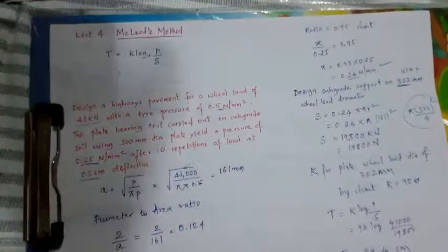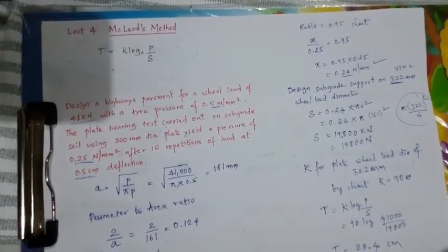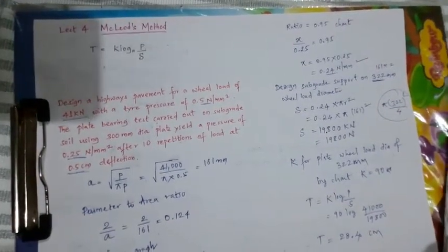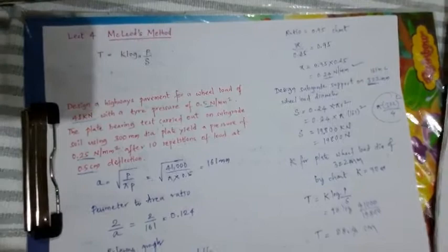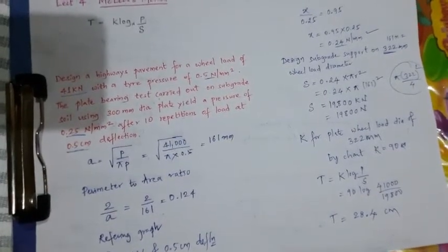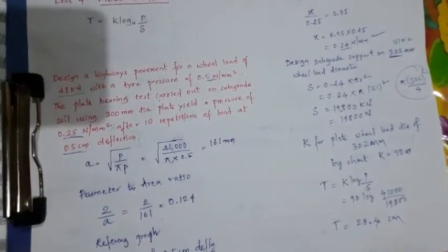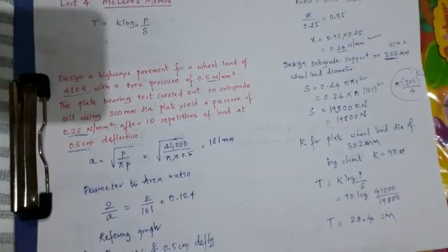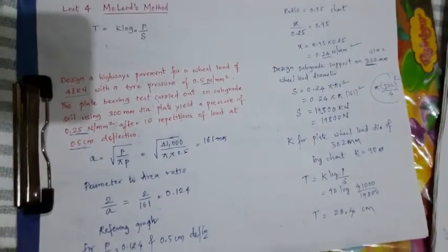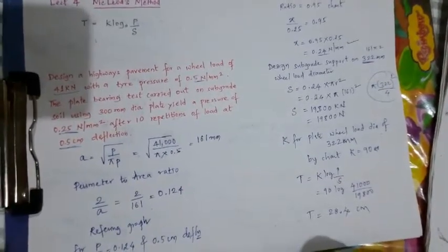Take one more problem for the assignment. Design a highway pavement for a wheel load of 51 kilonewton with a tire pressure of 0.5 newton per mm square by McLeod's method. The plate bearing test carried out on a subgrade soil using 300 mm dia plate which yields a pressure of 0.3 newton per mm square after 10 repetitions of the load. Calculate here at 5 mm and 2.5 mm deflections. Same one problem only, you have to calculate for 5 mm deflection and one more is 2.5 mm deflections.